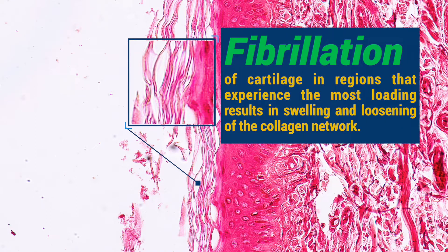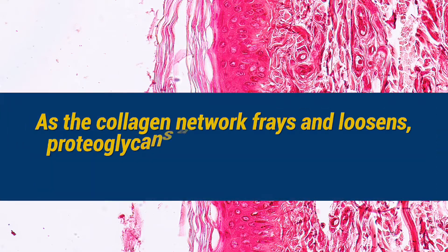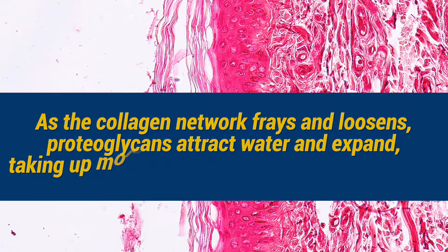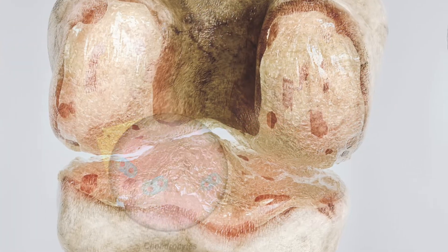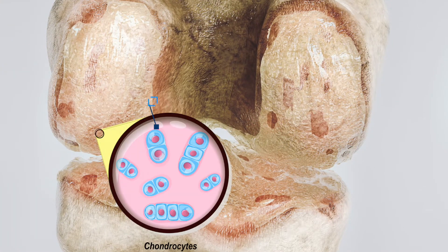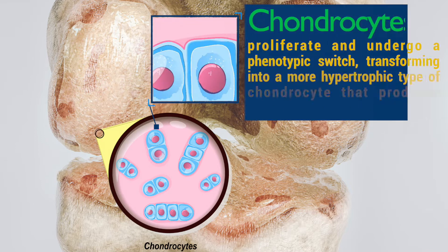As the cartilage frays, it swells as the collagen network loosens. This allows its proteoglycans to attract water and expand, taking up more space within the cartilage matrix. With continued abnormal joint loading, chondrocytes, which are responsible for maintaining the cartilage, proliferate and undergo a phenotypic switch.